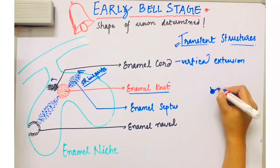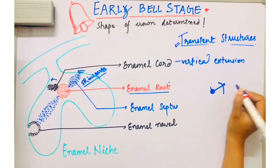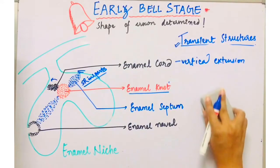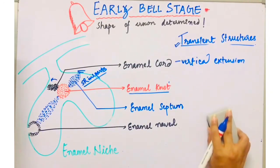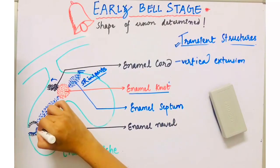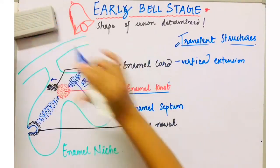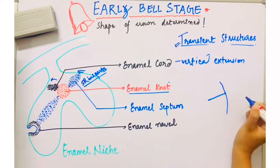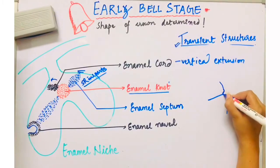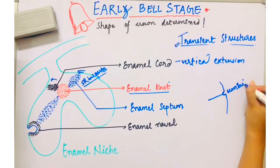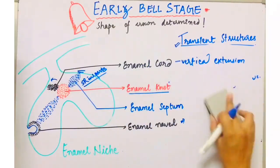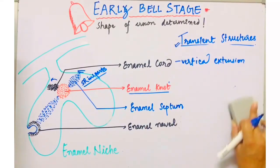The next transient structure is the enamel navel. It is the depression seen at the outer enamel epithelium at the point where the cord meets it. When the septum is extending and meeting the outer enamel epithelium, sometimes the outer enamel epithelium shows a depression which resembles the umbilicus. This depression is known as the enamel navel. These are four of the transient structures seen in the bell stage, before formation of enamel begins.